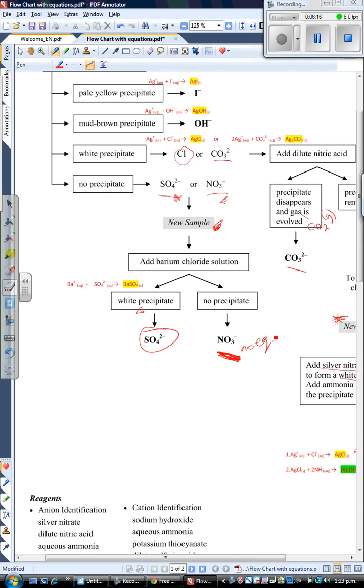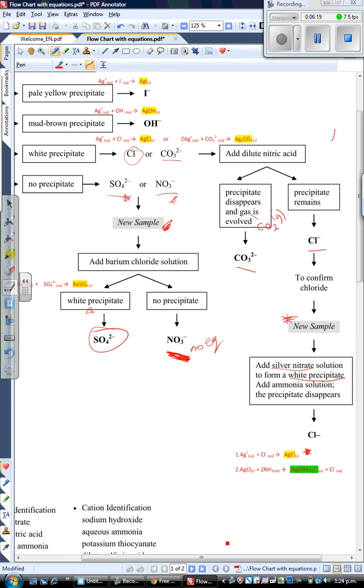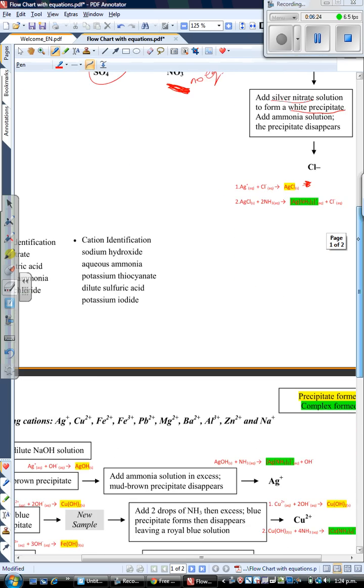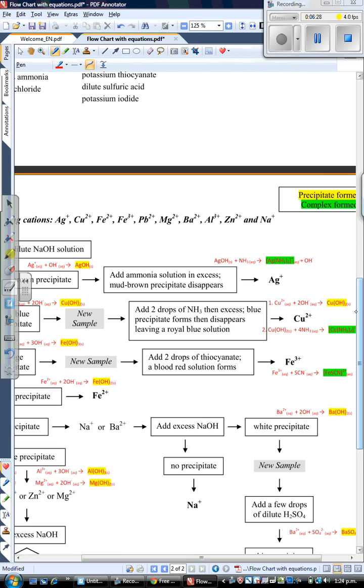That's a brief overview of the anions flowchart. Now I'm going to continue down to the cations flowchart, so I'll stop this recording and render the first video, then do one for the cations.